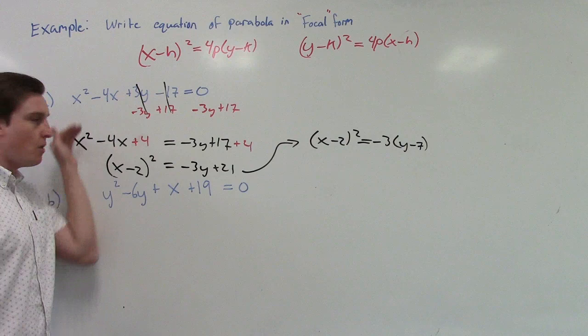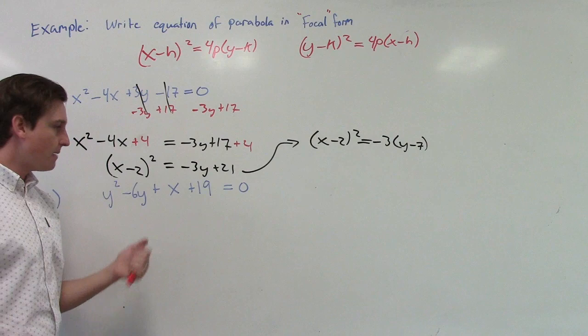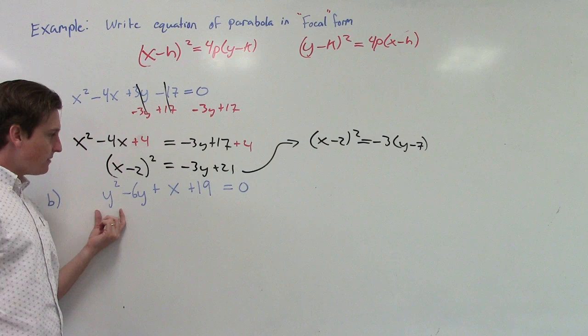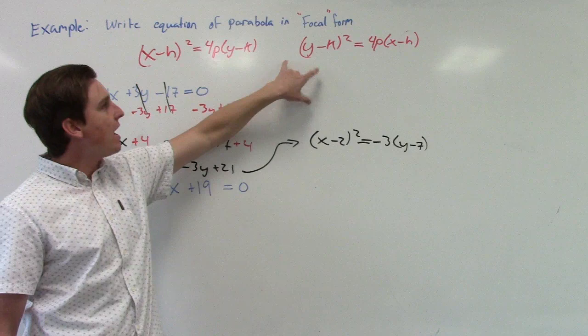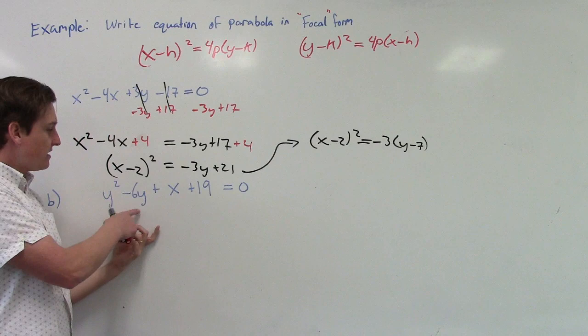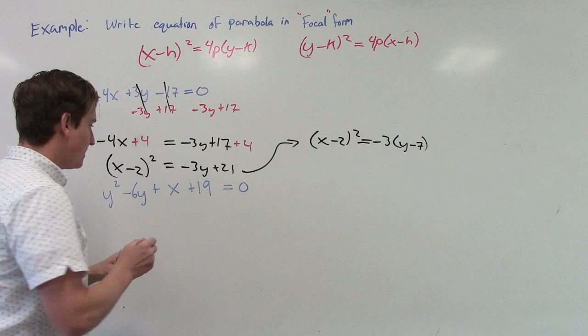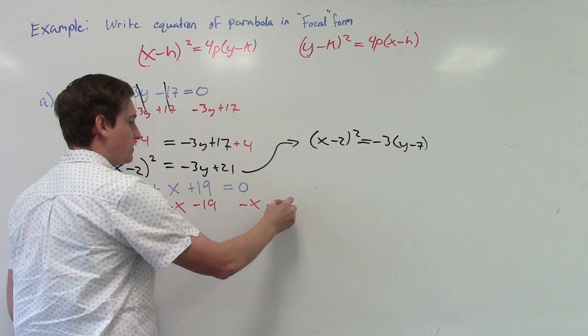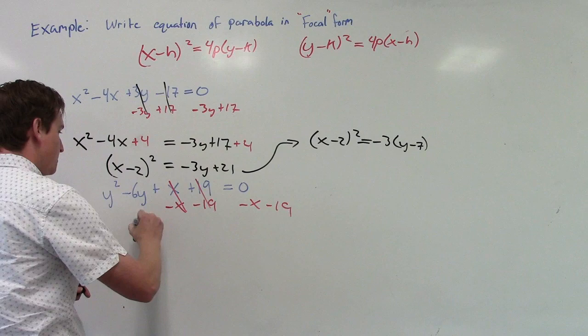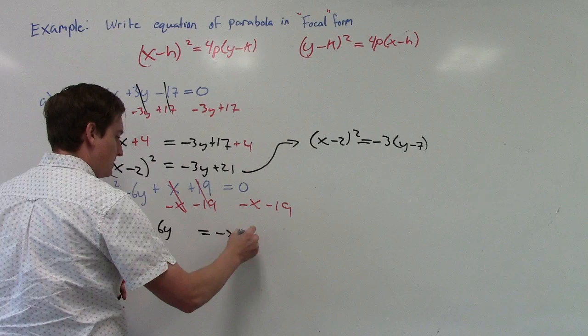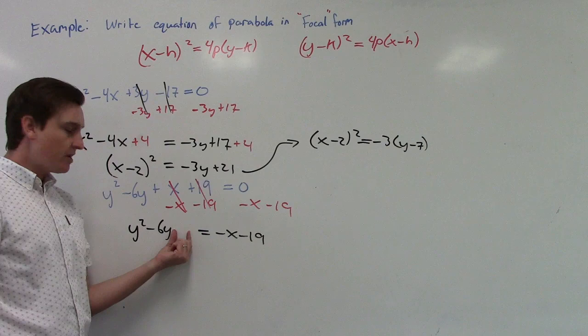We're going to do it again. If you haven't mastered it yet, you can go back and watch the completing-the-square part again. Here's another example. In this case the y part is squared — y squared — but there's no x squared, so we know it's going to look more like the other form. We want the y stuff on the left-hand side. Anything with y squared stays on the left; anything else that has a y stays with it. Everything else has to go. So we're going to subtract x and subtract 19 from both sides.